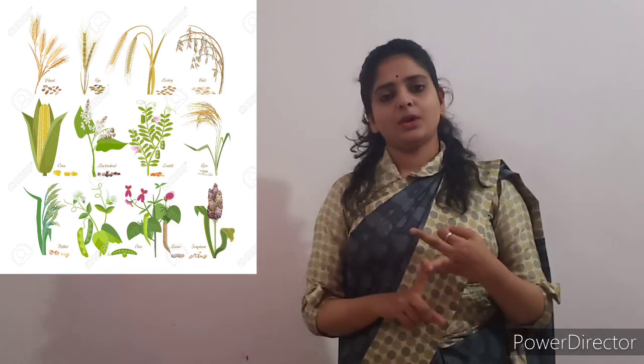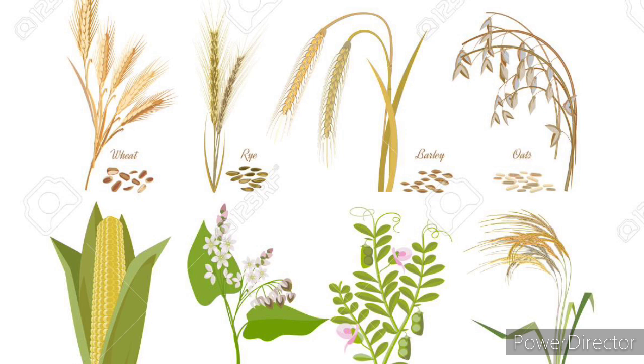The next topic is what types of plants are involved in crop production. There are three types: first, cereal-giving plants; second, vegetable-giving plants; and third, fruit-giving plants. Cereals are any grass cultivated for the edible components of its grain. These are plants that look like grass from which we get eatable components, like rice, wheat, and paddy.